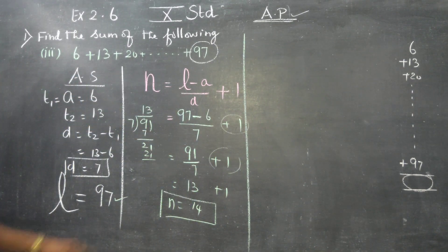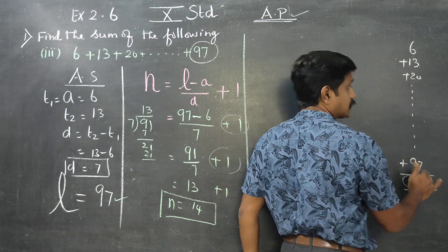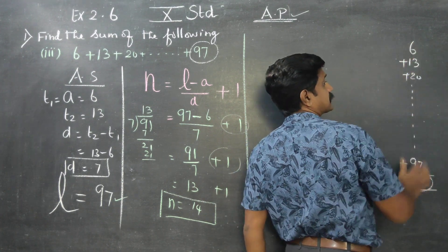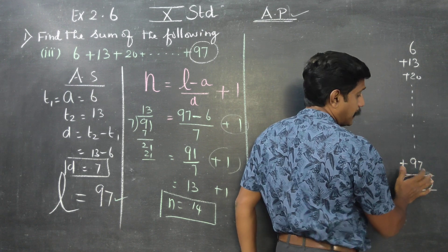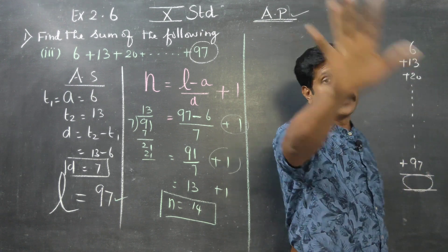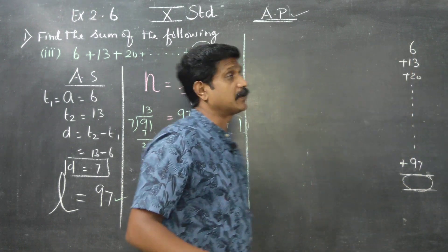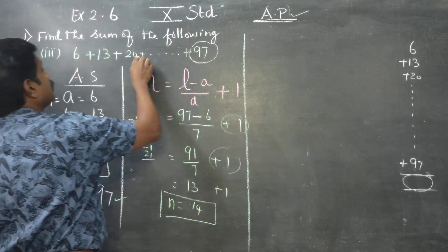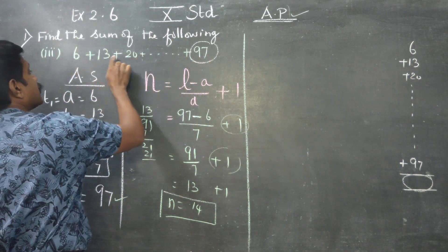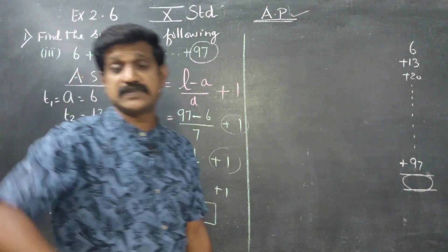The number of terms n is equal to 14. The number of members in the group is 14 members.